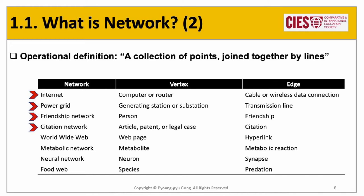In academia, we refer to each other's work, and thanks to this practice, there is a large web of citation networks. There is also one of the largest fields leading research in network analysis: our body, brain, and ecosystem, which are composed of complex networks of various elements.